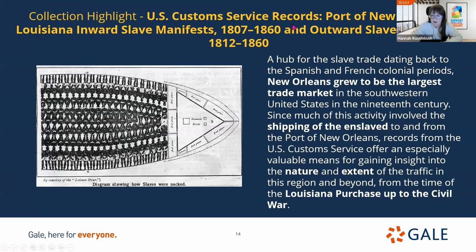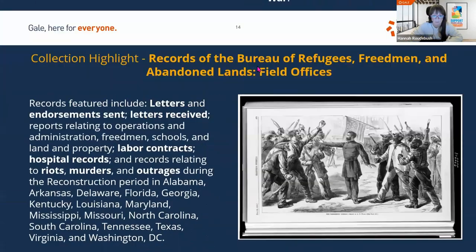We also have the U.S. Customs Service records from the Port of New Orleans — one of the largest trade market ports in the world, specifically in the southwestern United States during the 19th century. This is where many of the enslaved were shipped to the U.S. Here you can view the nature and extent of the traffic of this region, read about conditions, and view the ship manifests of who was transported on what ship. Last but not least, we have records of the Bureau of Refugees, the Freedmen, and Abandoned Land offices — labor contracts, hospital records, and records relating to riots, murders, and outrages during the Reconstruction period, most specifically in the south.